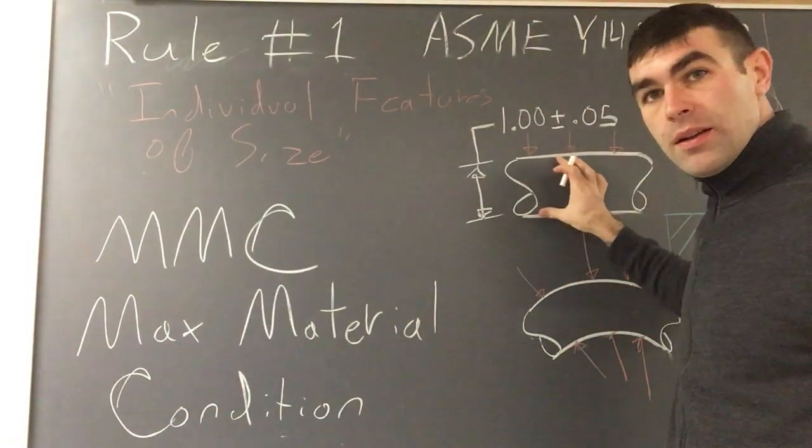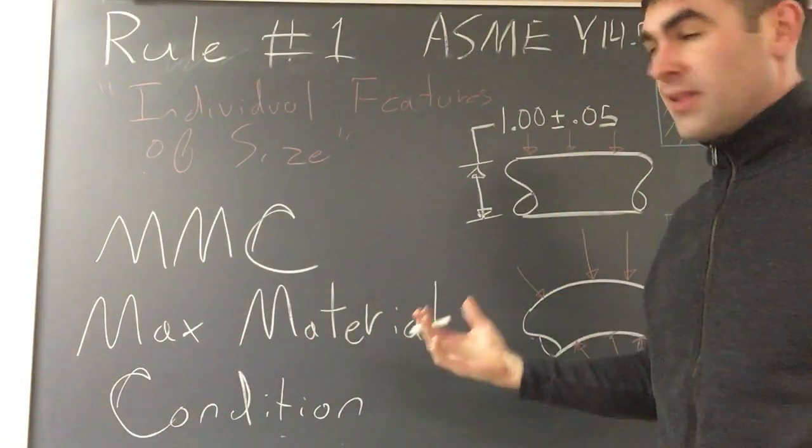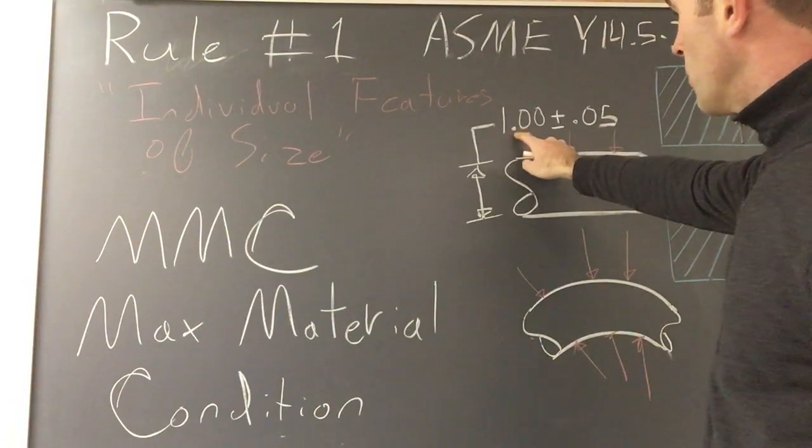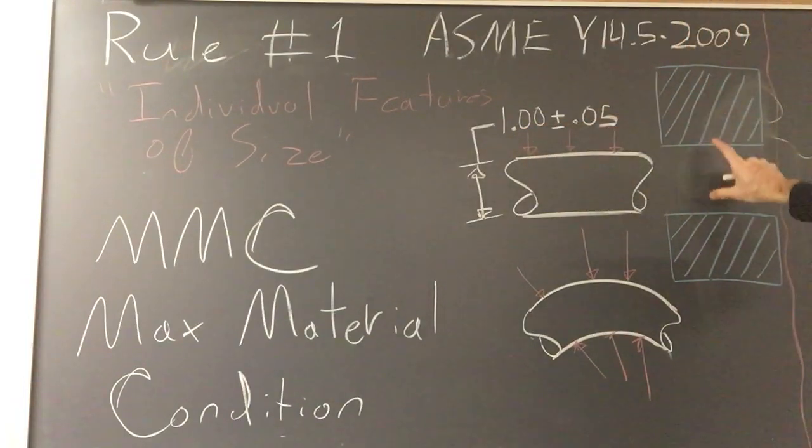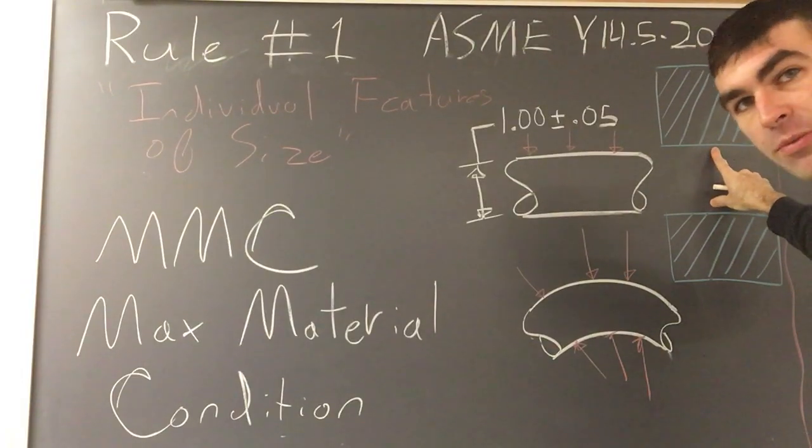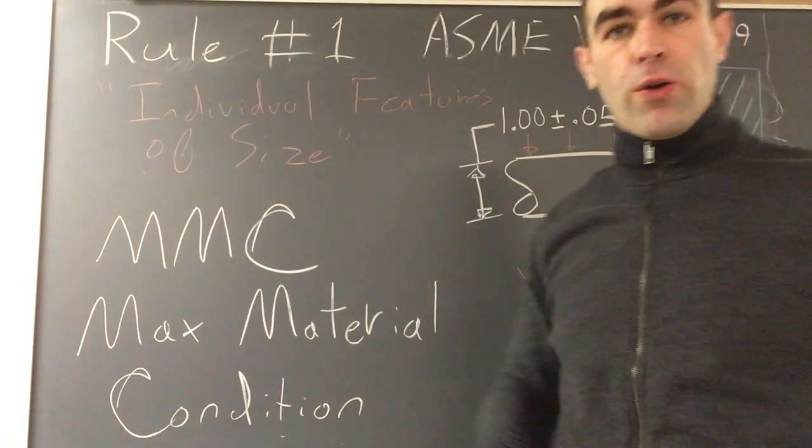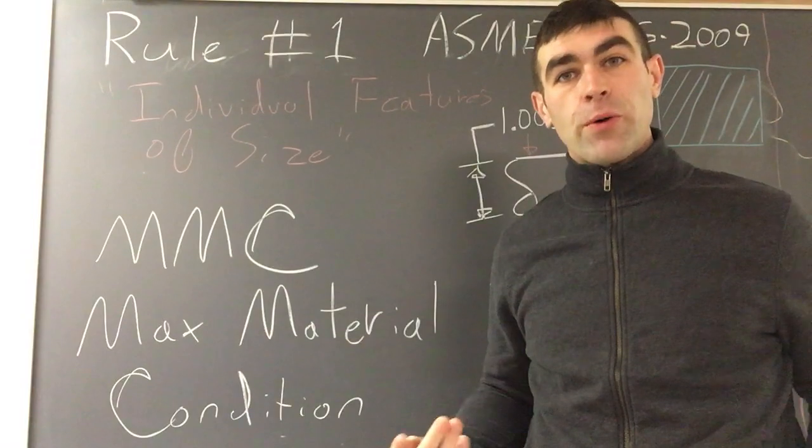If it's a pin, it's going to be when the diameter is the biggest. So in this case, it would be 1.05. But for this hole, the max material condition would be when the hole is its smallest because it has the most material.